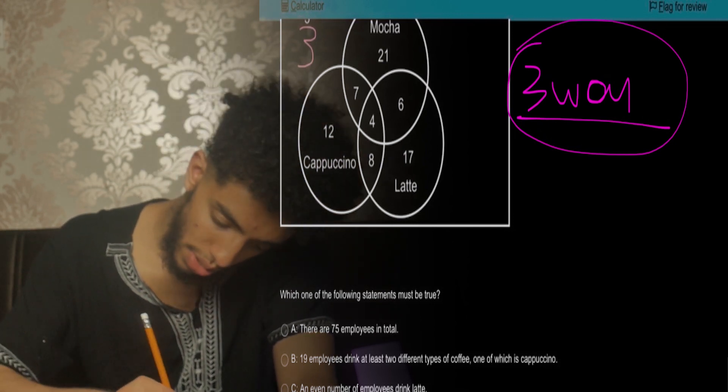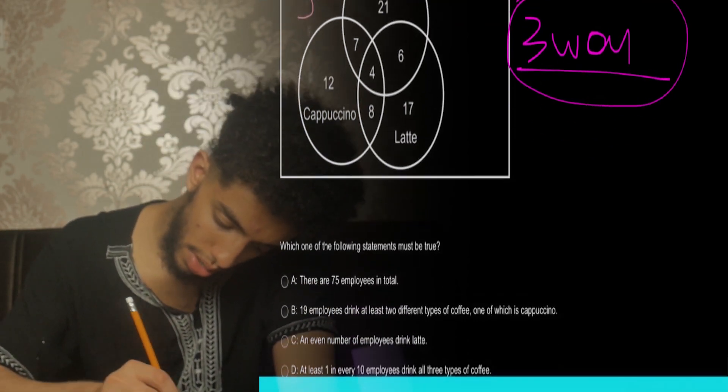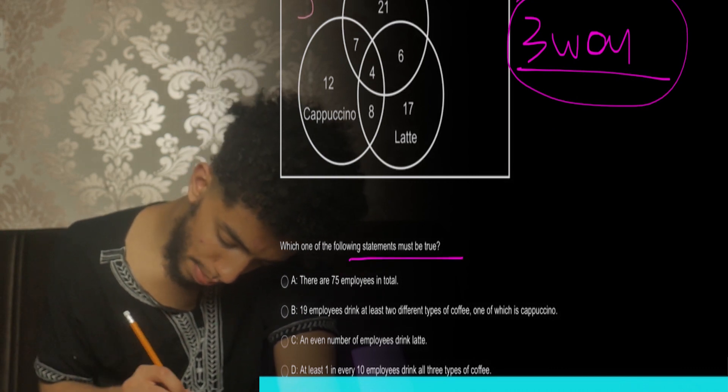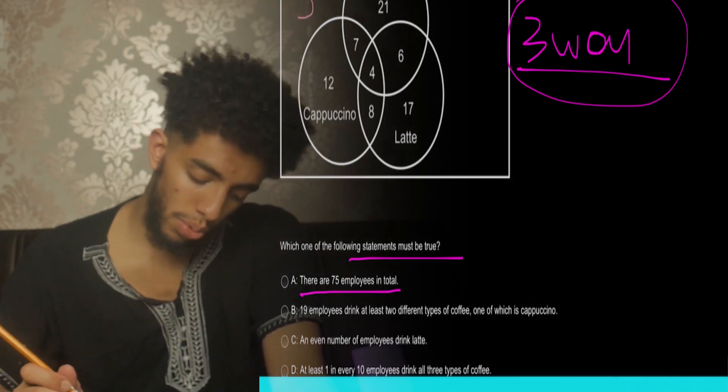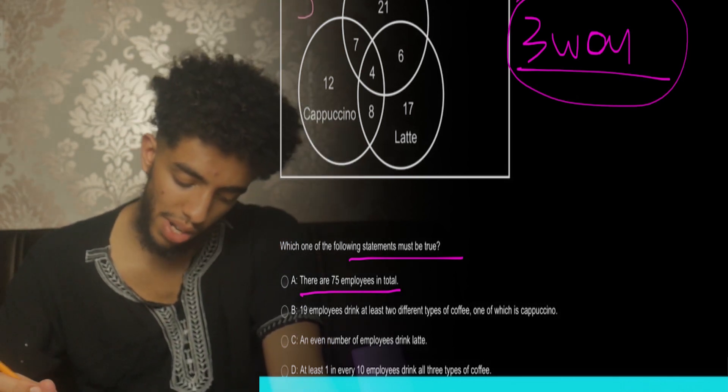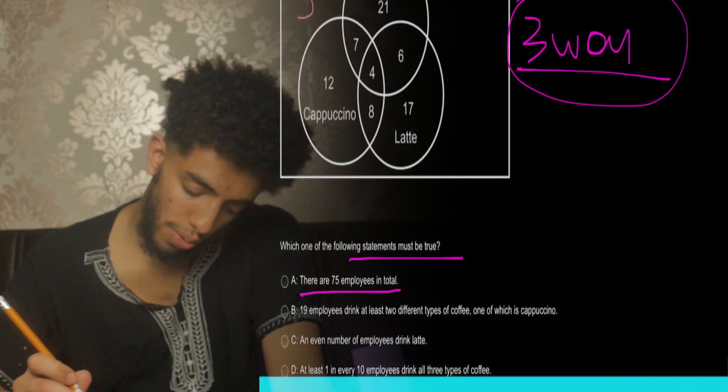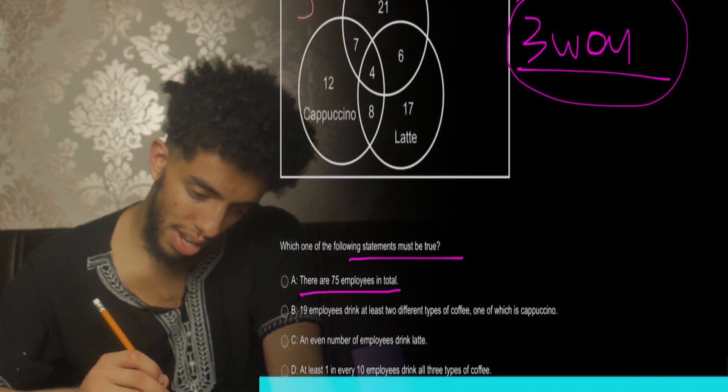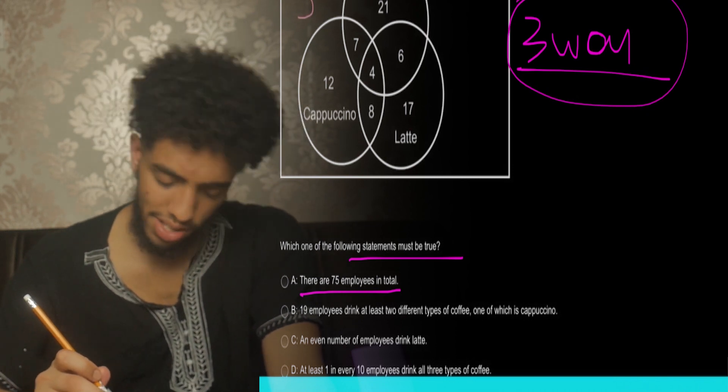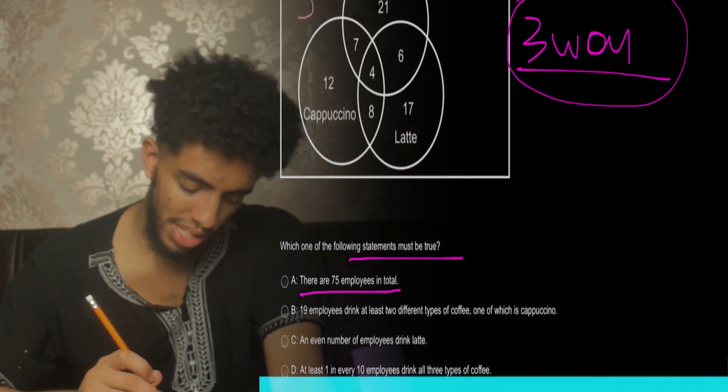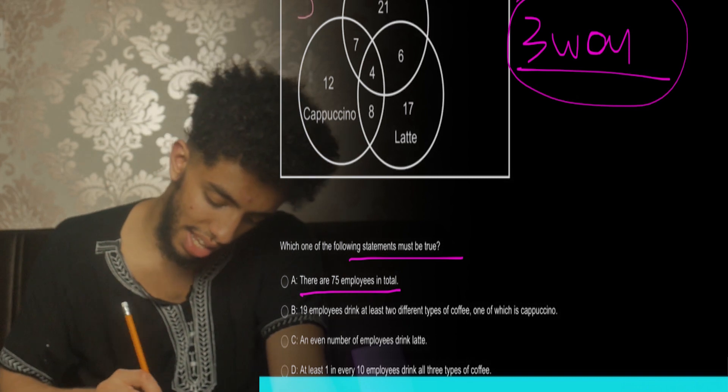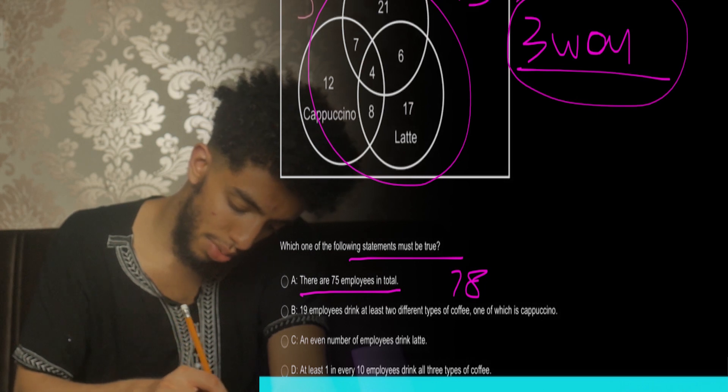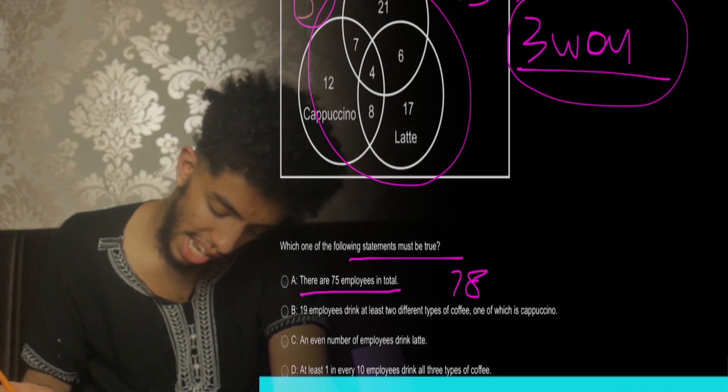Let's move a bit down. Which of the following statements must be true? 75 employees in total. Now if you add up all the numbers: 17 plus 6, that's 23, plus 21 is 44, plus 4, 48, plus 8 plus 7, that's 15, 63, plus 12, 75, plus 3, 78. If it was just this that would be 75, but remember to include the 3 as well, so 78. So this is wrong.